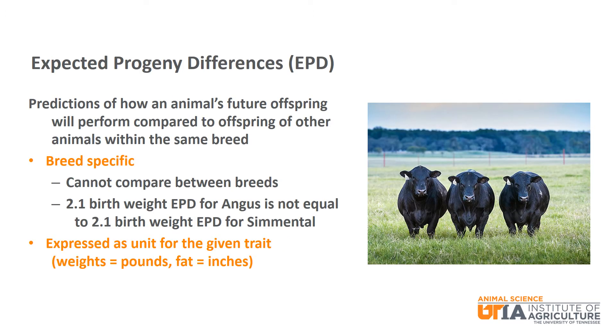EPDs are predictions of how an animal's future offspring will perform compared to other animals' offspring of the same breed. They are breed specific, meaning that you cannot compare EPDs for a certain trait across breeds. For example, a 2.1 pound birth weight EPD for Angus is not equal to a 2.1 pound birth weight EPD for Simmental. You have to compare each number back to the breed average for each breed. EPDs are expressed as the unit for each particular trait, such as pounds for weights and inches for fat thickness.